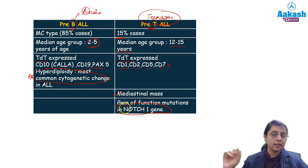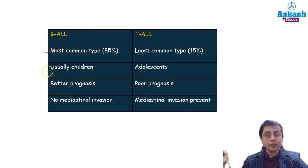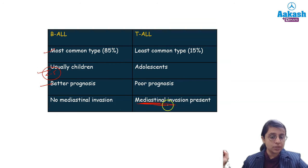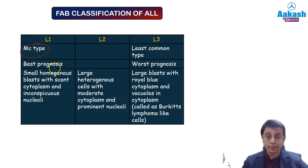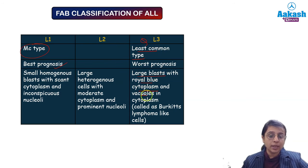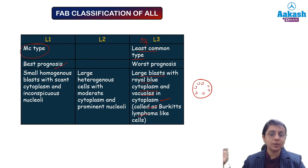That is the difference between pre-B ALL and pre-T ALL. In FAB classification: L1 is the most common type and has the best prognosis. L3 is commonly asked in exams — these cells have large blasts with royal blue cytoplasm containing vacuoles, giving a Burkitt's lymphoma-like appearance. Burkitt's lymphoma-like appearance is seen in the L3 variant of ALL.